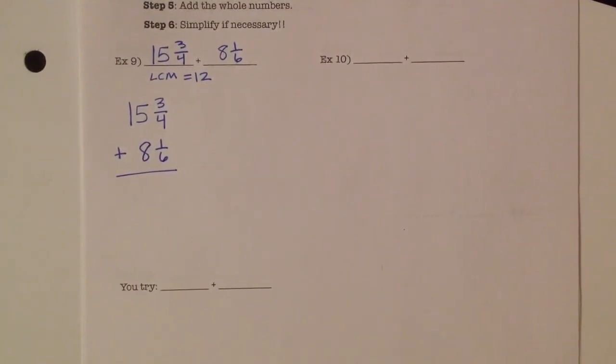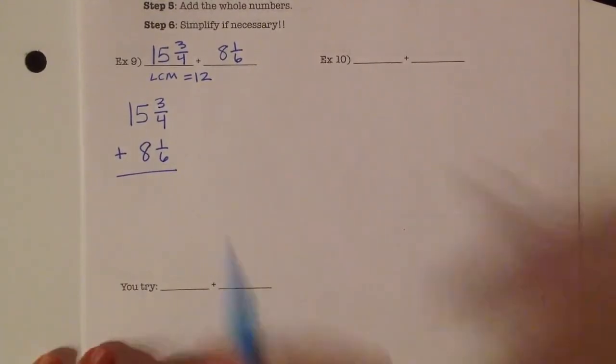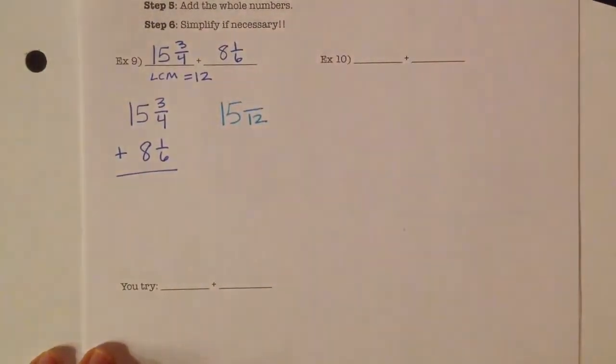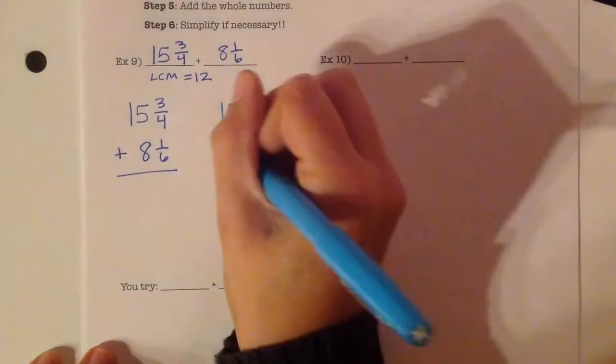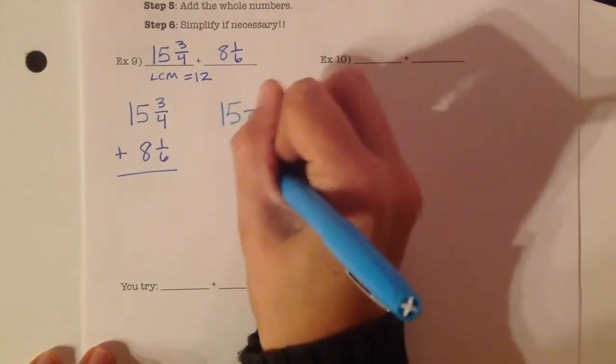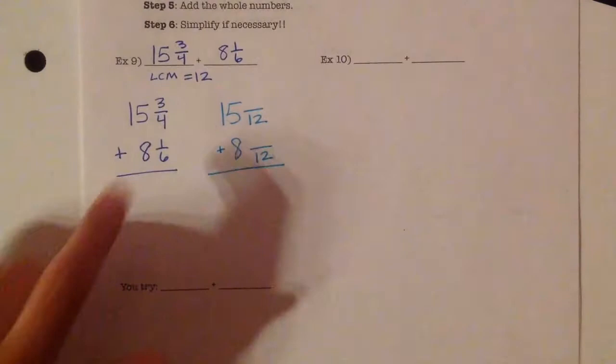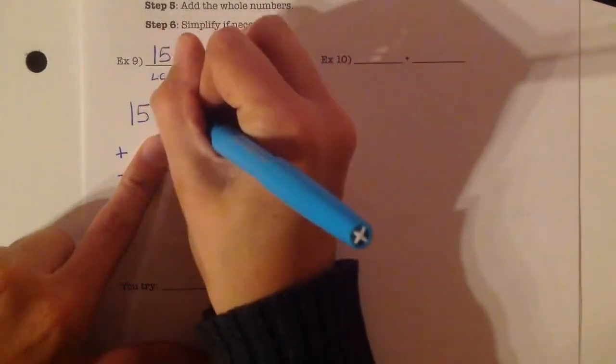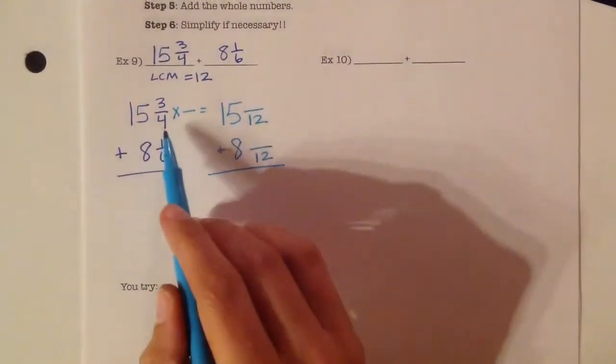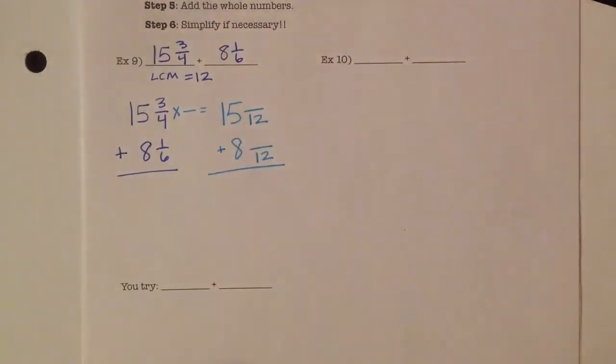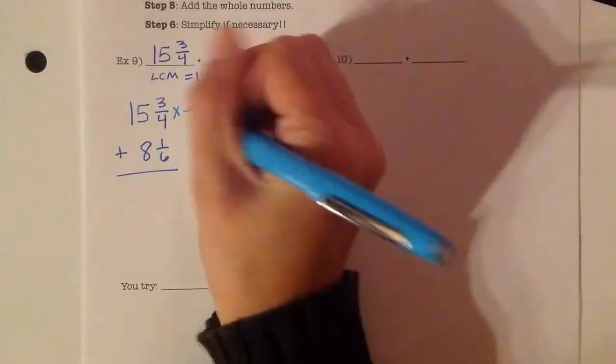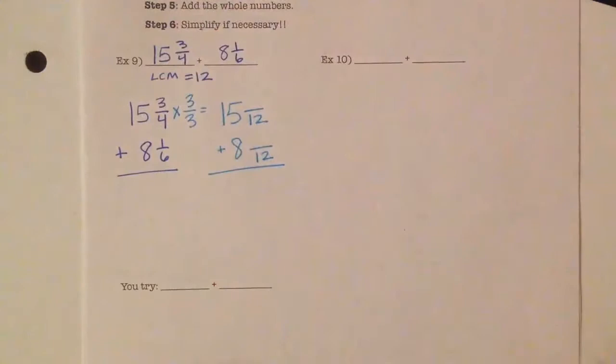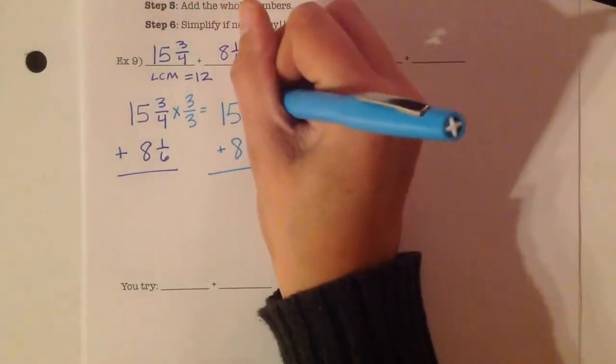Now I need to rewrite the problem with the same common denominator. My whole numbers stay the same, but my denominators are going to become 12. I have to multiply it by something to get to 12, and I have to multiply the numerator and denominator by the same number. 4 times what equals 12? 4 times 3 equals 12. If I multiply the bottom by 3, I have to multiply the top by 3. 3 times 3 is 9.